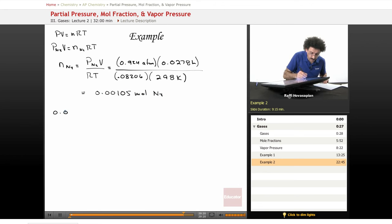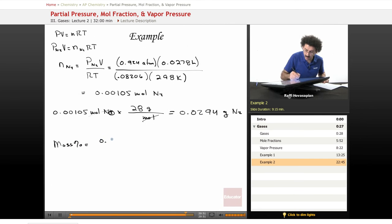0.00105 moles of nitrogen gas times 28 grams per mole. It's 28 because this is N2. Nitrogen is 14, N2 is 28. We end up with 0.0294 grams of N2. Mass percent equals 0.0294 grams divided by the total number of grams, which was 0.225 in our compound. When we multiply by 100 percent, 13 percent nitrogen by mass.